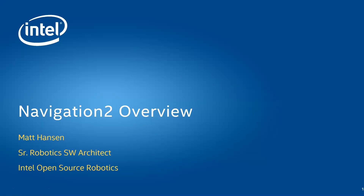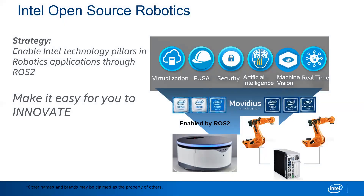Matt asked me to give an overview of Navigation 2, and for those going to ROSCon, this is a subset of my ROSCon presentation I'll be giving at the end of October. We are Intel Open Source Robotics. Intel is a technology company with technologies in virtualization, security, AI, machine vision, and compute power. Our goal in open source robotics is to enable those technology pillars into robotics applications through ROS2 and provide an easy platform for people to innovate.